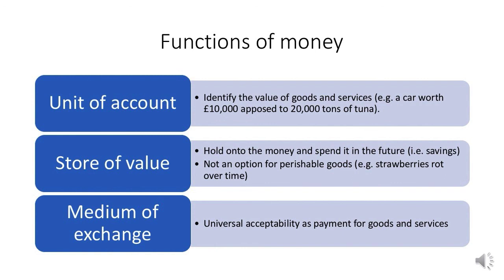The first is unit of account — this is to identify the value of goods and services. For example, a car is worth £10,000 as opposed to £20,000 of tuna. The second would be store of value: you'd be able to hold on to the money and spend it in the future, i.e. savings — and it's not an option, of course, for perishable goods, for example strawberries rot over time. The third is medium of exchange: universal acceptability as payment for goods and services.